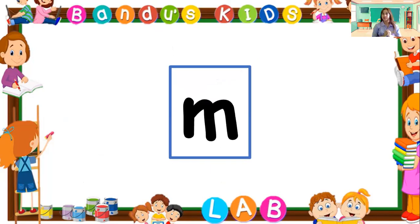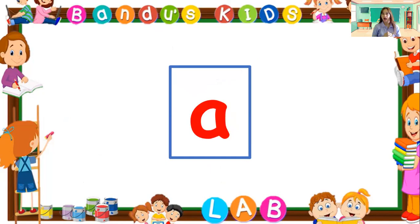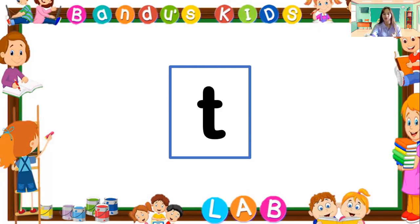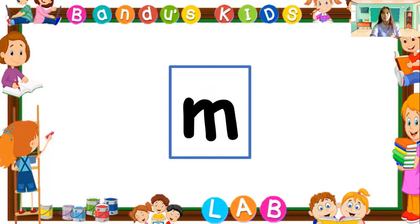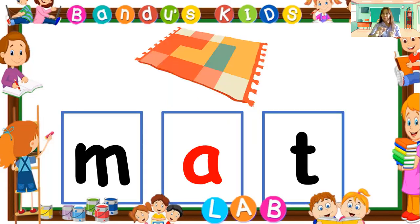What letter is that? It's letter M. What is the sound of letter M? Ma. Next letter is A, then T. What word can we create with the sounds of letter M, A, T? Ma + AT equals the word mat. Let's say it one more time: Ma, at — mat. Very good.